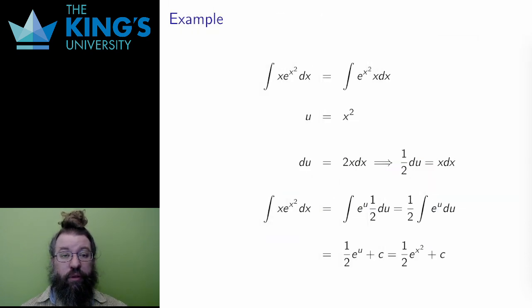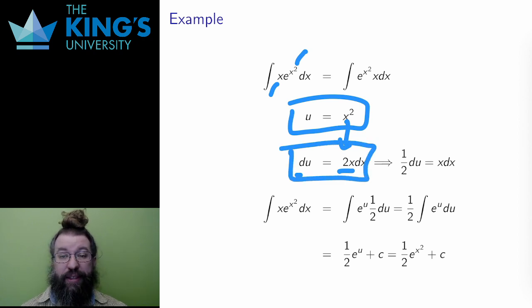Here is another example. It looks like I have a composition with an inside x². The x outside also looks promising. Let me try u = x². The du is related to dx by the derivative 2x. du = 2x dx.